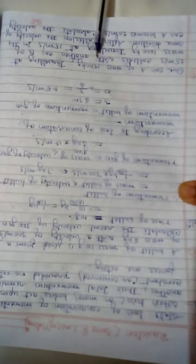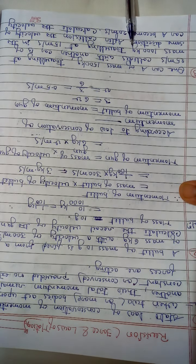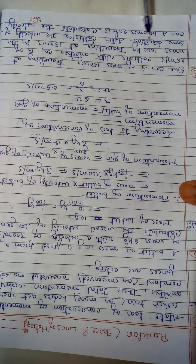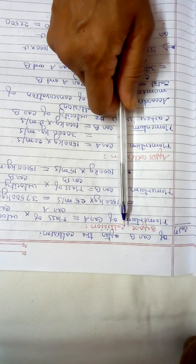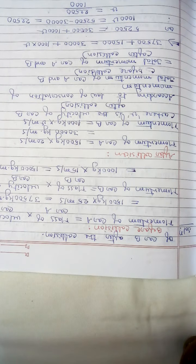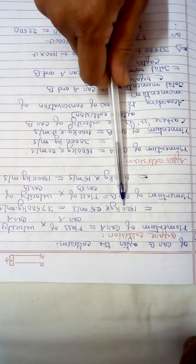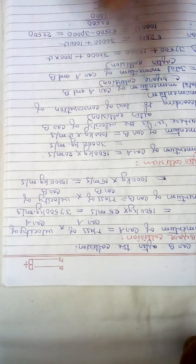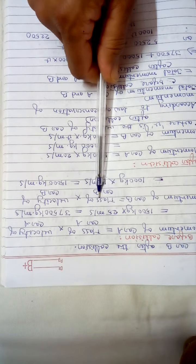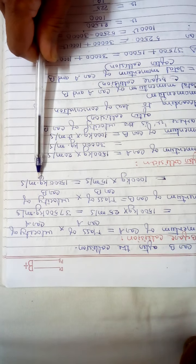Next question. Here we first have to find the momentum of car A and car B before collision and after collision. Momentum of car A equals mass of car A into velocity of car A, which gives 1500 kg into 25 m/s, equals 37,500 kg·m/s. Momentum of car B equals mass of car B into velocity of car B, which gives 1000 kg into 15 m/s, equals 15,000 kg·m/s.